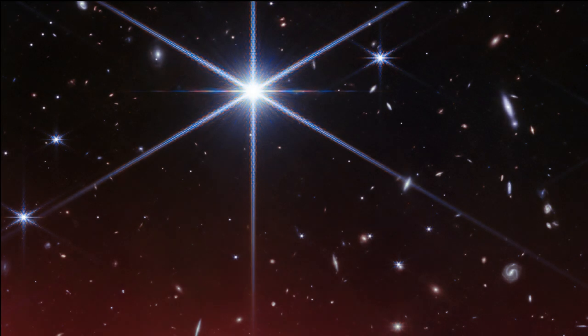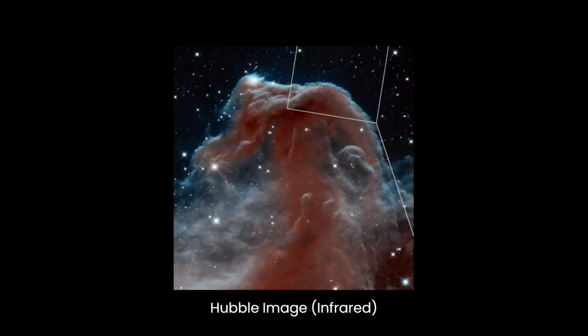The iconic structure of the Horsehead Nebula, characterized by its horse-like appearance, stems from erosion processes that have left behind a dense pillar of gas and dust. However, this distinctive formation is transient. Scientists predict it will dissipate within the next five million years.